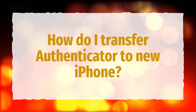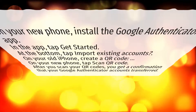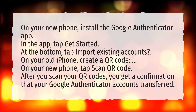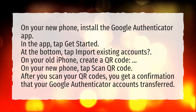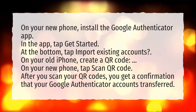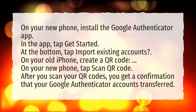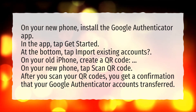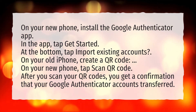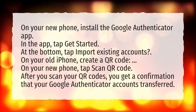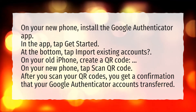How do I transfer Authenticator to a new iPhone? On your new phone, install the Google Authenticator app. In the app, tap Get Started. At the bottom, tap Import existing accounts. On your old iPhone, create a QR code. On your new phone, tap Scan QR code. After you scan your QR codes, you get a confirmation that your Google Authenticator accounts transferred.